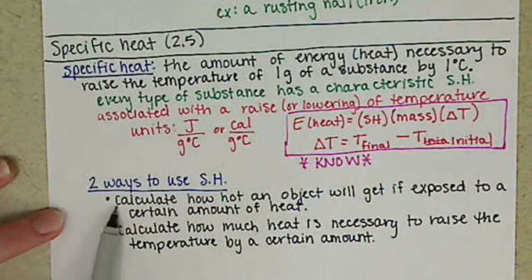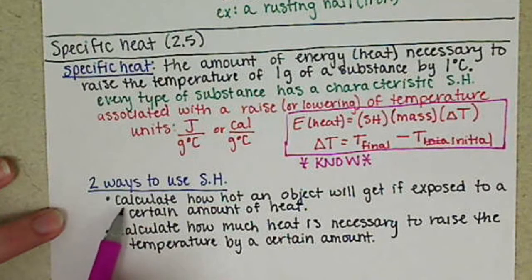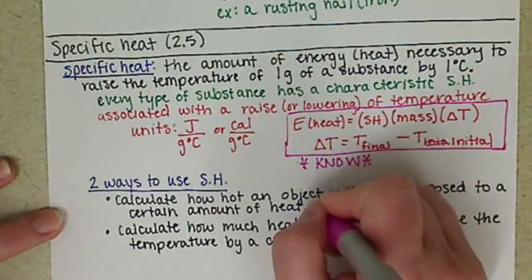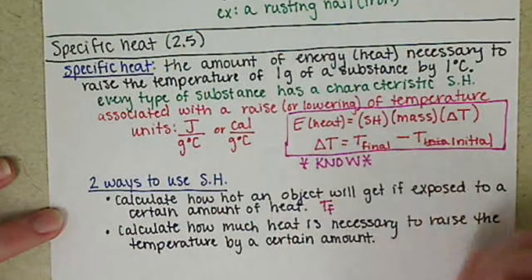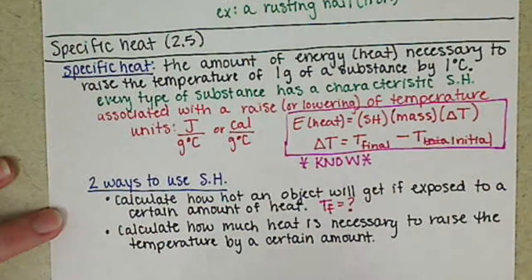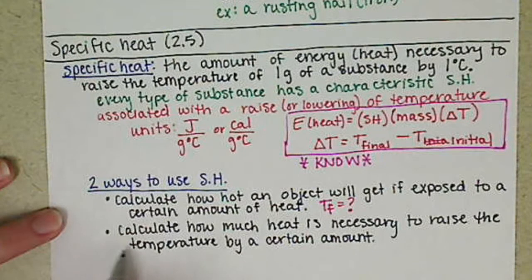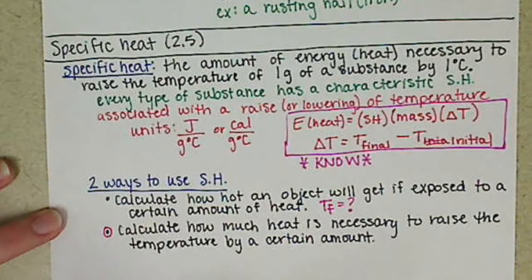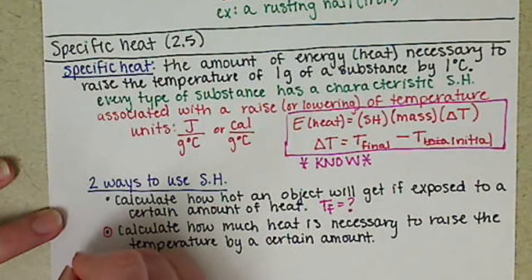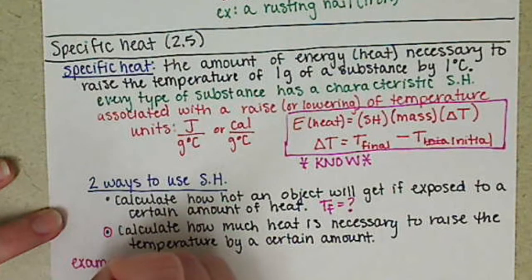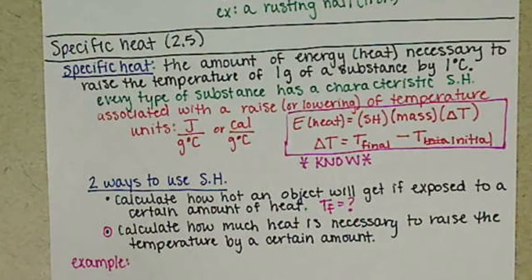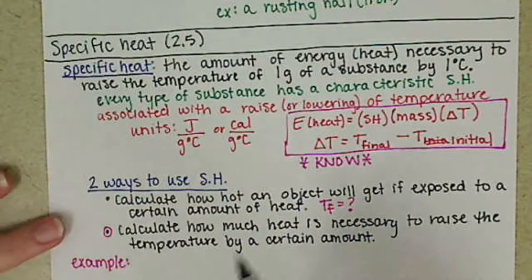There are examples in your book that you can work through as well as QMP dealing with calculating how hot the object gets, so basically calculating T final. What I'd like to do is show you an example more commonly, how we use the second one. So basically if we know how much we have to increase the temperature, how much energy is that going to require?